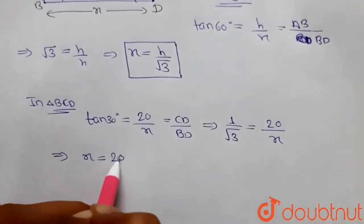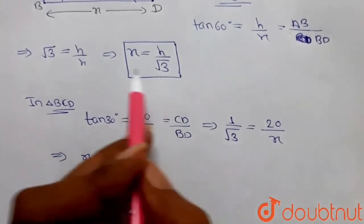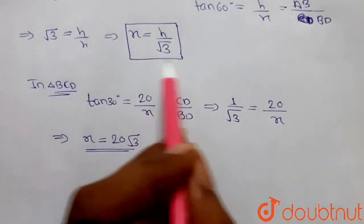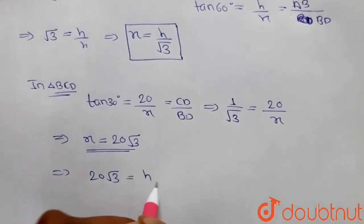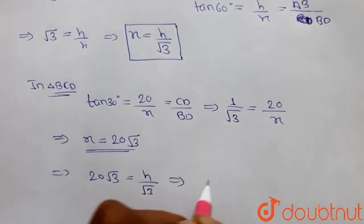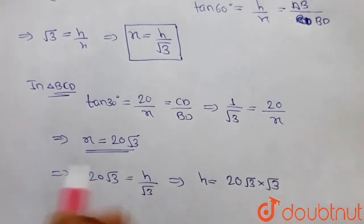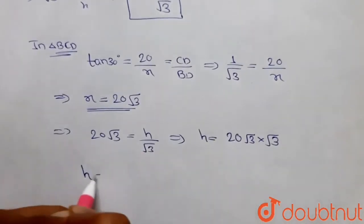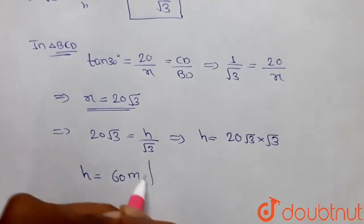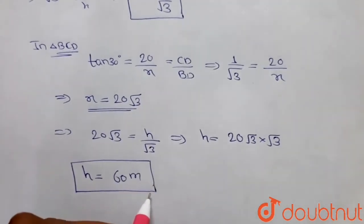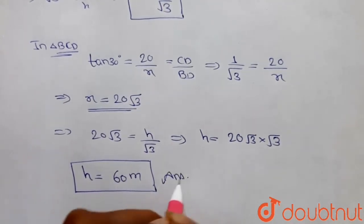We got x = 20√3. Substituting this into the first equation: 20√3 = h / √3, so h = 20√3 × √3 = 20 × 3 = 60 meters. Therefore, the height of the tower AB is 60 meters. I hope this helps, thank you.